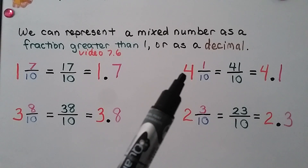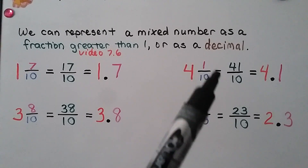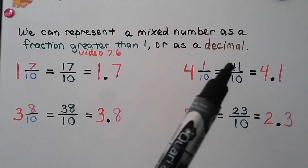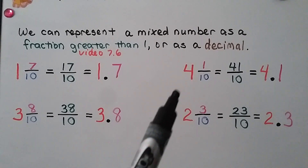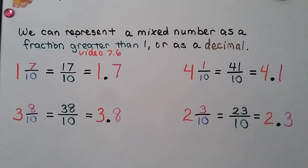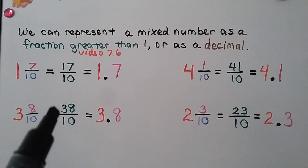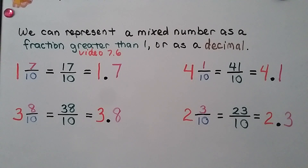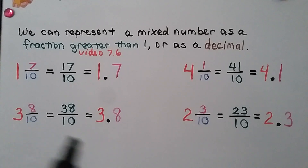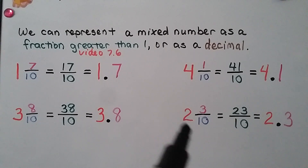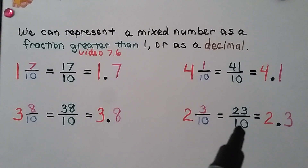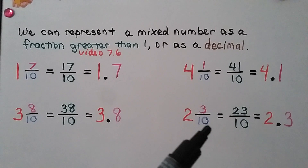For four and one-tenth: four times ten plus one equals forty-one, so it's forty-one tenths. As a decimal: 4.1 — four in the ones place, decimal point, one in the tenths place. For three and eight-tenths: three times ten plus eight equals thirty-eight tenths. As a decimal: 3.8. For two and three-tenths: two times ten plus three equals twenty-three tenths. As a decimal: 2.3 — two in the ones place, decimal point, three in the tenths place.